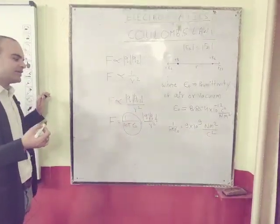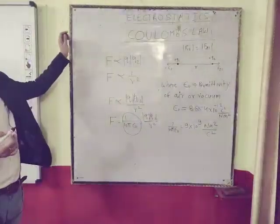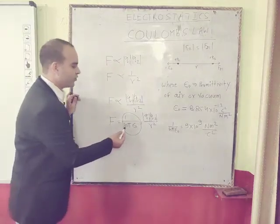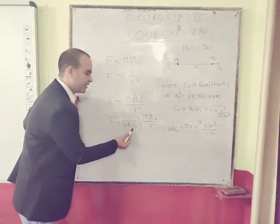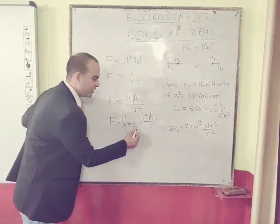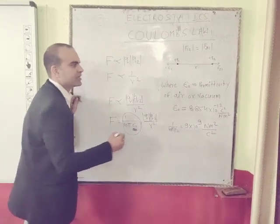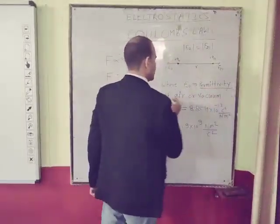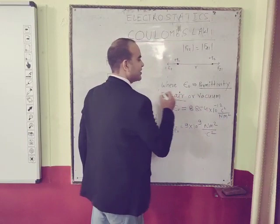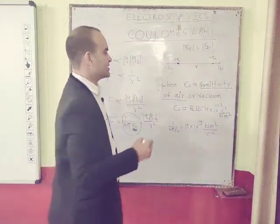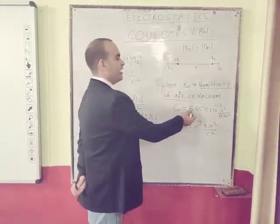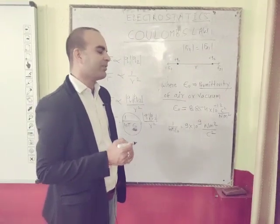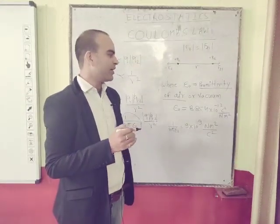Such a constant is known as the electrostatic constant, expressed as 1 over 4πε₀, where ε₀ is the permittivity of air. The value is 8.854 × 10⁻¹² Coulomb square per Newton meter square.